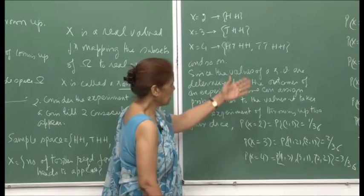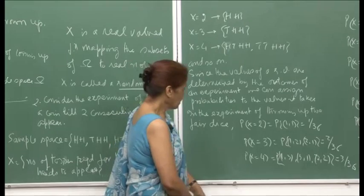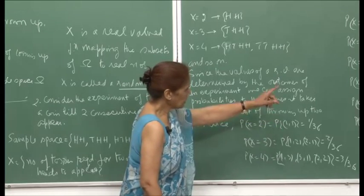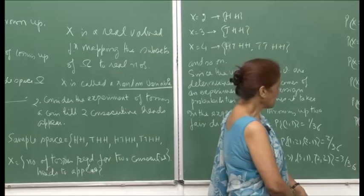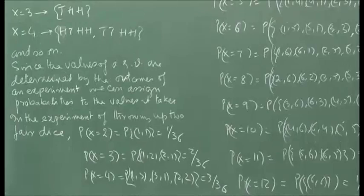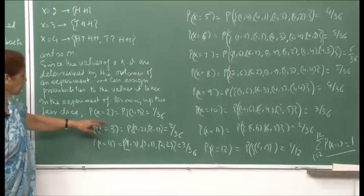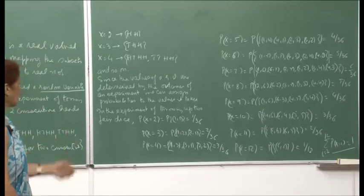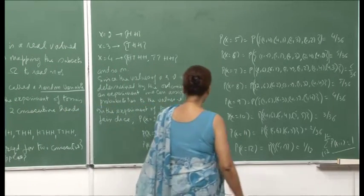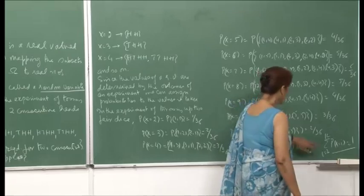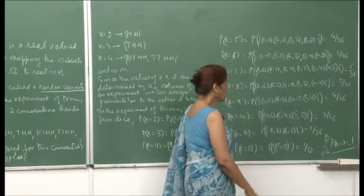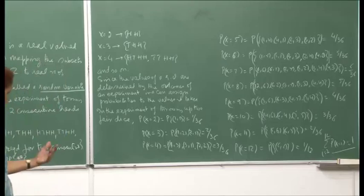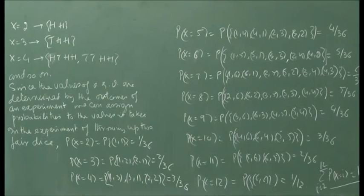For all different values that x can take from 2 to 12, we can identify the corresponding subsets and associated probabilities. Since x must take one of the numbers from 2 to 12 when throwing 2 dice, these are all possible events, and the sum of probabilities — probability x equals i, for i varying from 2 to 12 — must equal 1. This is the probability mass function, which we will now formally define.